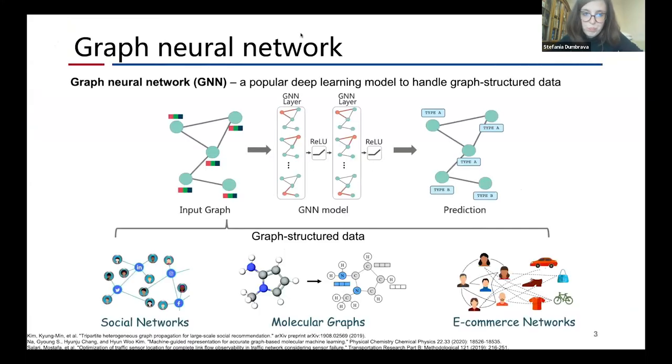Graph Neural Network is a popular learning model for graph structure data. Using the message passing mechanism to propagate information along predefined graph structure, GNN learns to predict node, edge, or graph level property in an end-to-end manner.